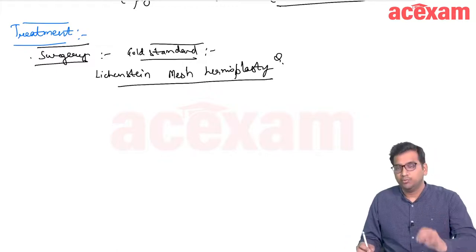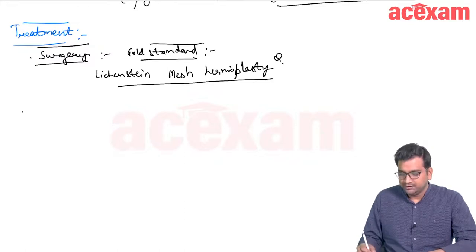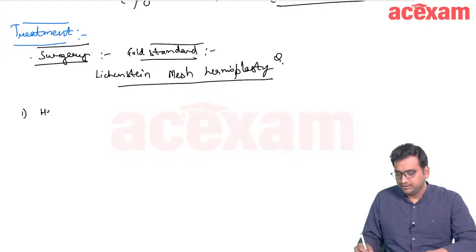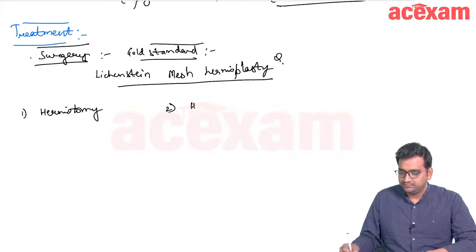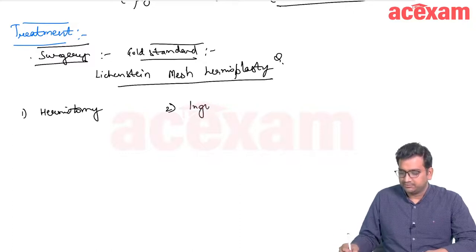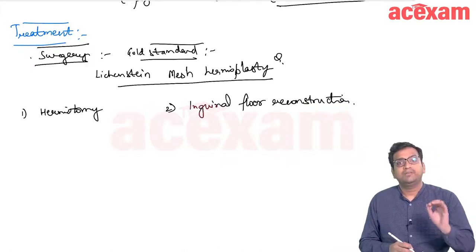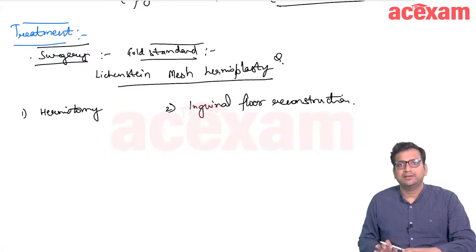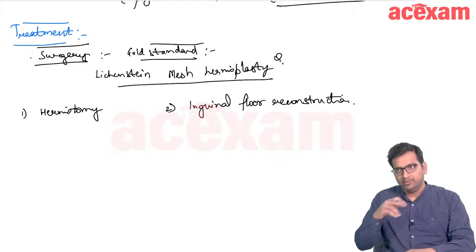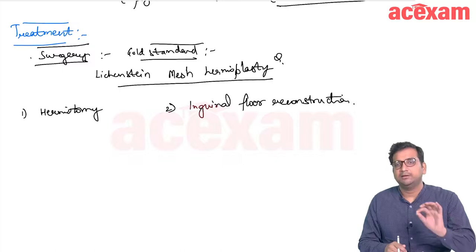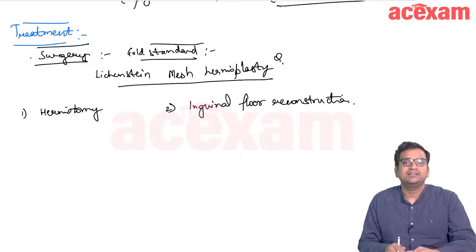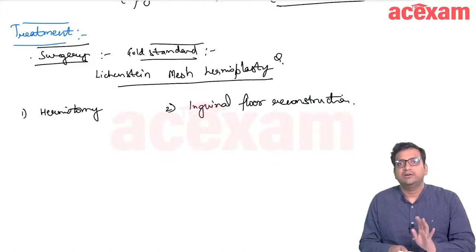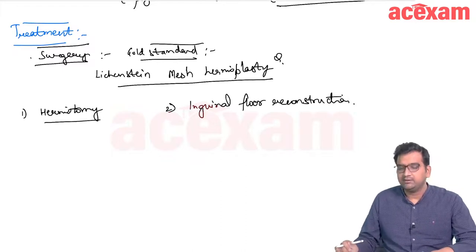The components of inguinal hernia repair are divided into three steps: first is herniotomy; second is inguinal floor reconstruction. Herniotomy is the treatment of choice for pediatric inguinal hernias — we dissect the redundant sac and close the inguinal canal. In adult patients, we always do herniotomy plus inguinal floor reconstruction.